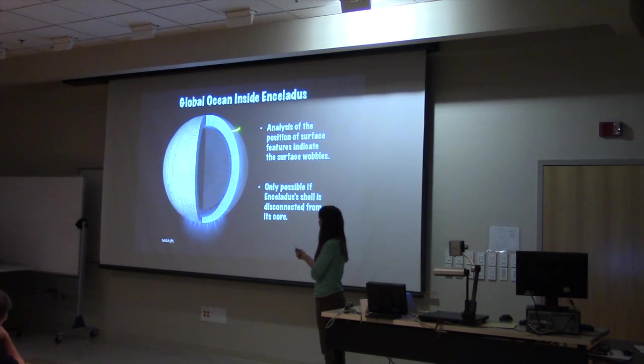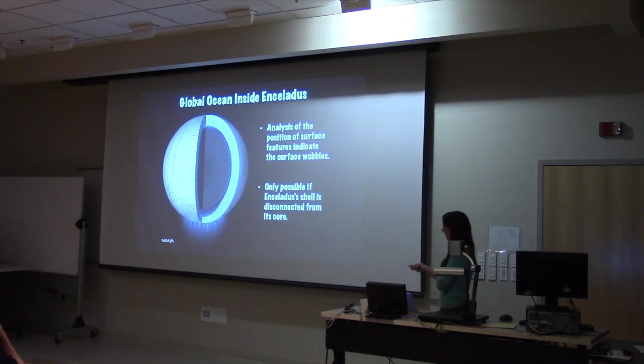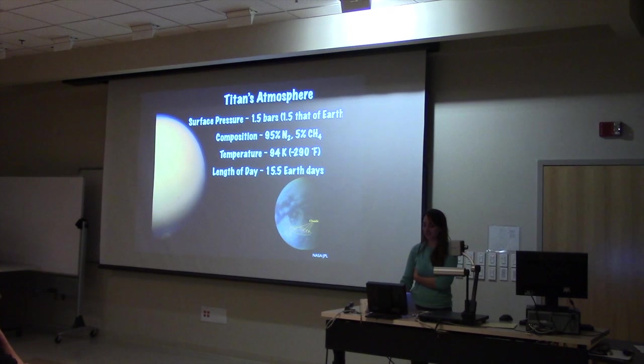So when you think about going to Europa, which is another icy moon, we're designing a mission to fly around it and study it, and in the long term we're thinking, how can we get through that ice shell and actually sample the liquid water? But Enceladus is giving us a direct sample through the plumes. So that's pretty cool.